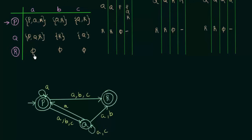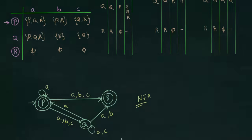R on inputs A, B and C doesn't go anywhere — it is just by itself. Now we have completed the NFA. We have drawn the transition diagram for the NFA which is equivalent to the Epsilon NFA that was given in our question. I hope that was clear to you. Thank you for watching and see you in the next one.